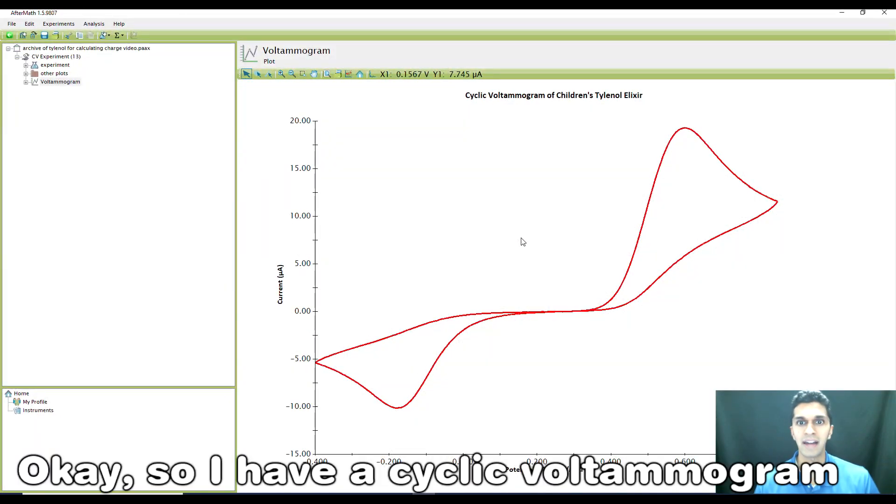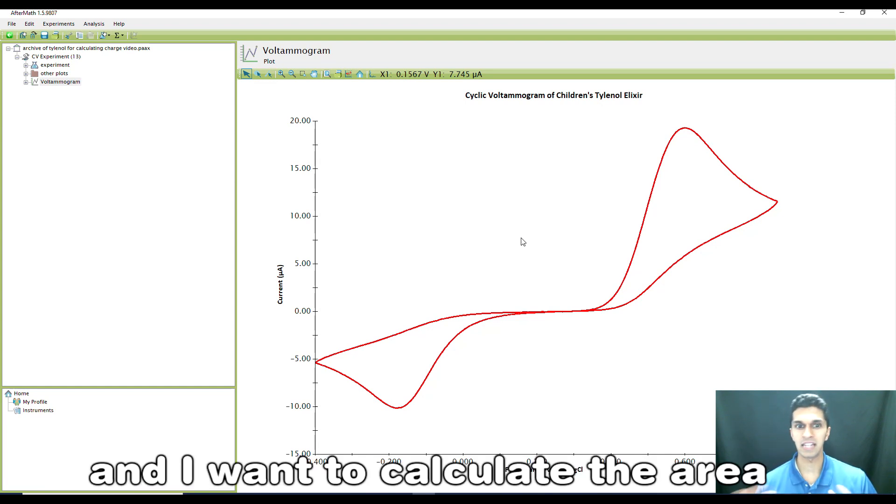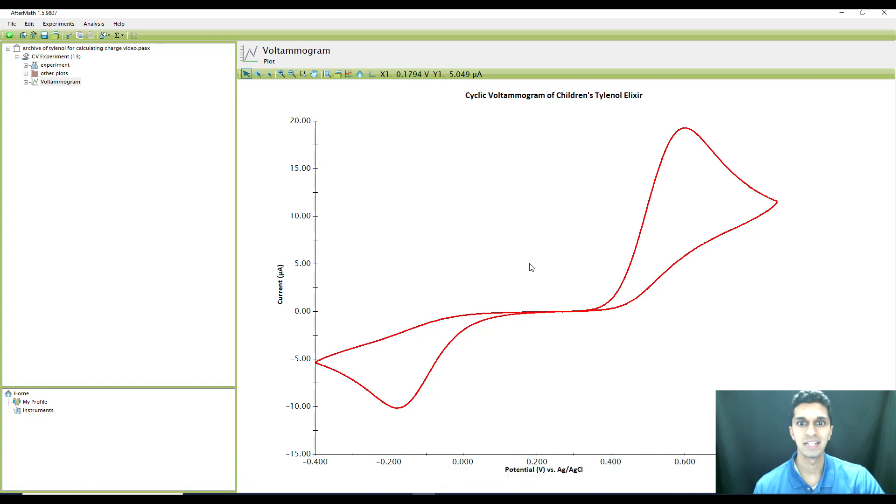Okay, so I have a cyclic voltammogram of children's Tylenol and I want to calculate the area under the curve. I want to figure out how much charge, how many molecules passed during the anodic and cathodic sweep.